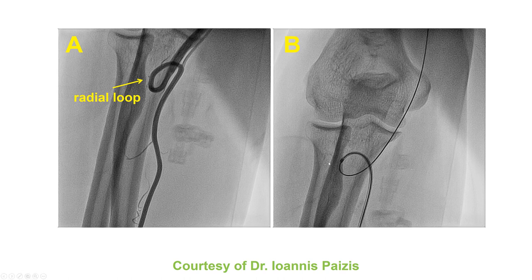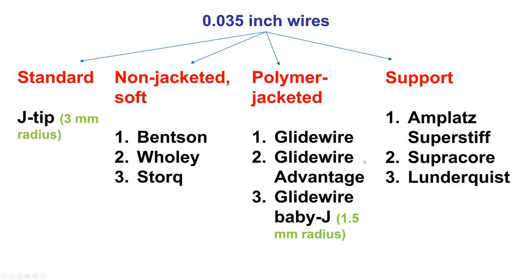These are examples of radial loops that can often be navigated with various guide wires and catheters. There are various categories of 0.035-inch wires: standard wires with a J-tip (usually 3 mm, with radial-specific ones having a 1.5 mm tip), non-jacketed soft wires such as the Benson, Woolie, and Stork that can navigate tortuosity without injuring the vessel, polymer-jacketed wires (the various types of glide wire, with the glide wire Baby-J being most commonly used for radial axis, with a 1.5 mm radius), and support wires for delivering catheters through resistance at the skin, iliac, or subclavian tortuosity.